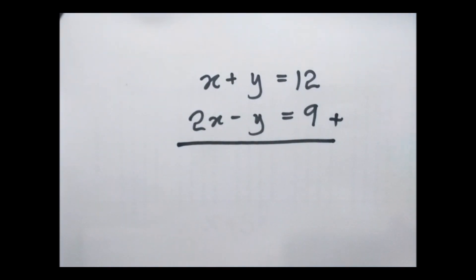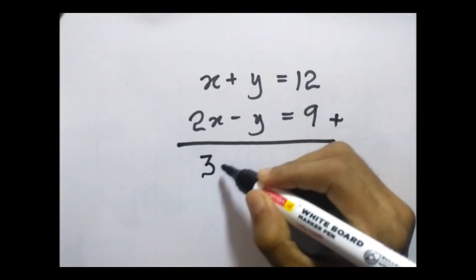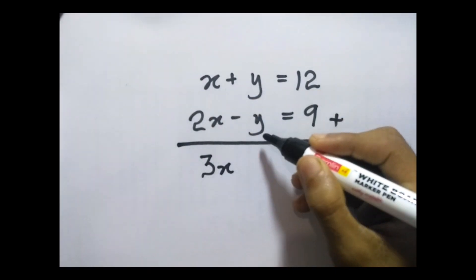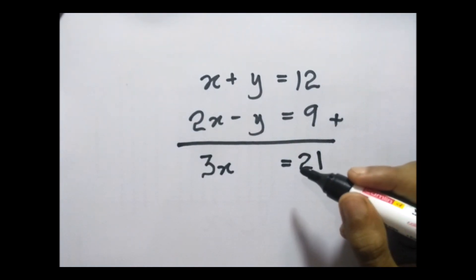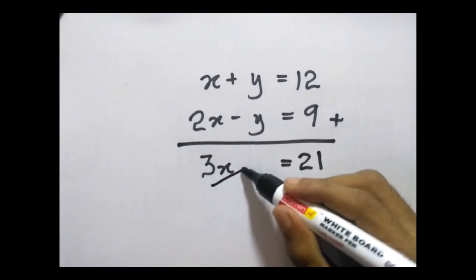I'm going to add them: x + 2x, that's 3x, and +y - y, that's 0, and 12 + 9 = 21. Now to find this x, we have to divide both by 3.